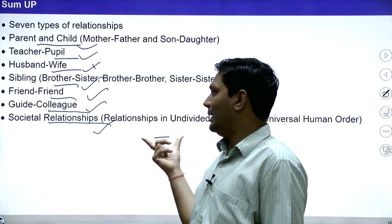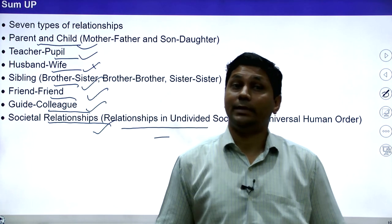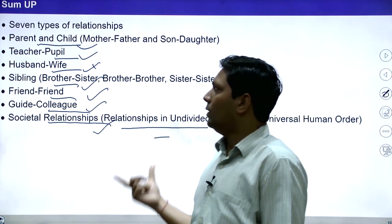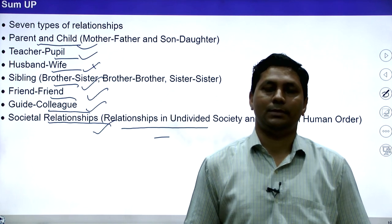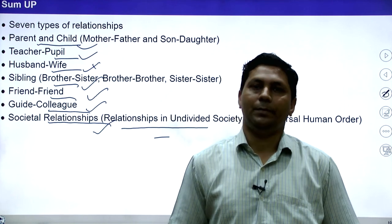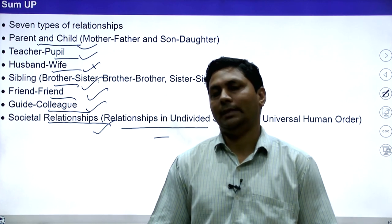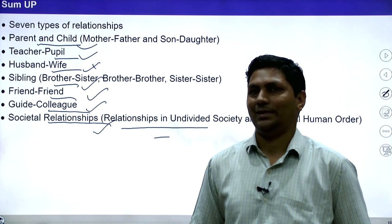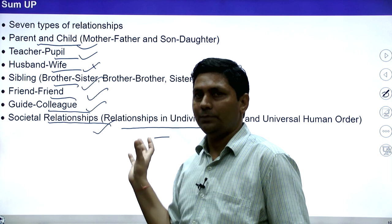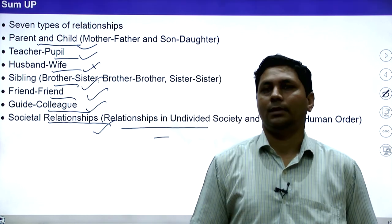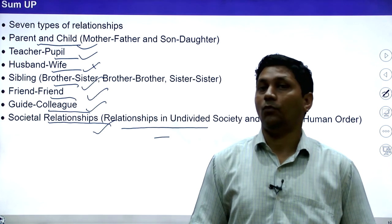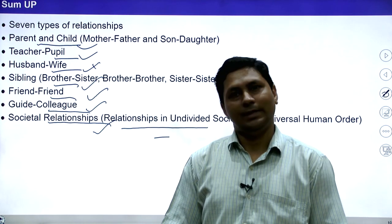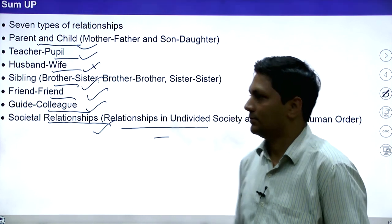For societal relationships, clarity of coexistence and clarity of interconnectedness are required. That is all from this lecture. In the next lecture we are going to study view 2 of relationship types. We have seen relationship types from view 1 today, and in the next lecture we will see another view. Have a good day, thank you very much.